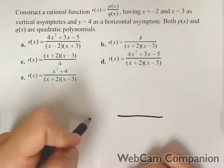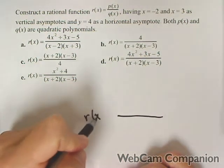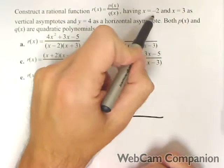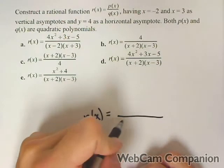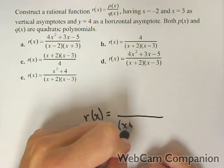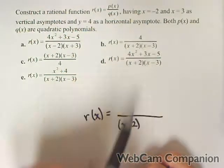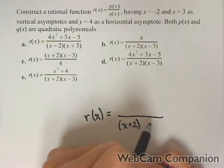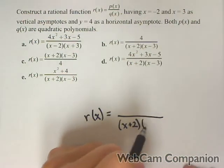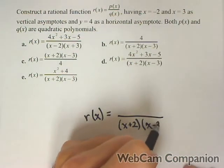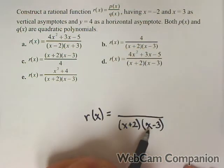That means those have to come from the denominator, so calling this r of x. For negative 2 to be a vertical asymptote, x plus 2 has to be a factor of the denominator, because when we plug in negative 2, it makes that 0. Similarly for x equals 3, x minus 3 has to be in the denominator.